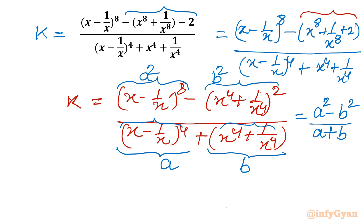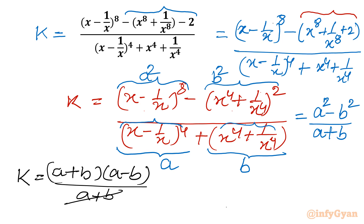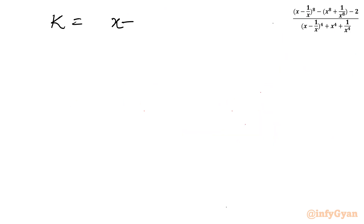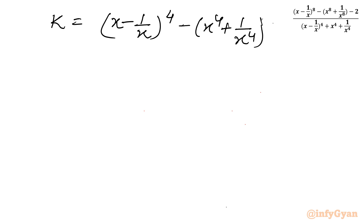Now applying difference of two squares: k equals (a + b)(a - b) divided by (a + b). We can cancel (a + b), so k simplifies to just a minus b. Remember, a was (x - 1/x)^4 and b was (x^4 + 1/x^4). So k equals (x - 1/x)^4 minus (x^4 + 1/x^4).